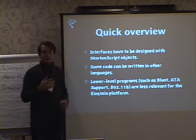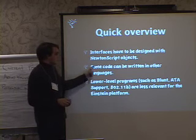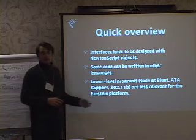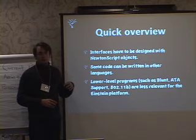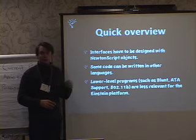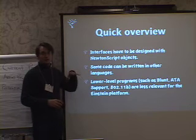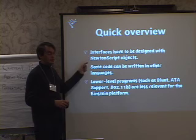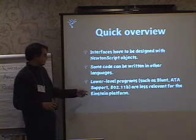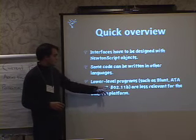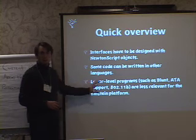You can't develop a Newton application purely in C++ or other common languages, but some code can be written in other languages. For example, if you want to write a chess game — like Deep Green — you can have C code for the chess engine and the interface in Newton script. Lower-level programs such as ATA support drivers or the 802.11b driver are less relevant for the Einstein platform.